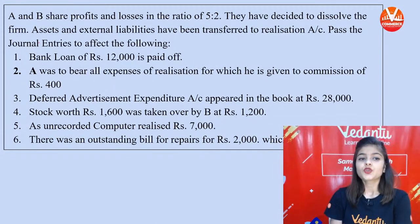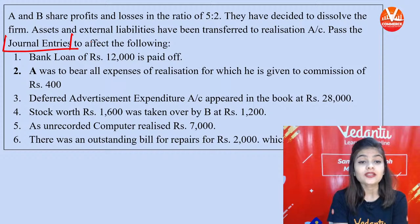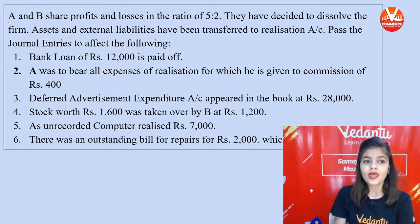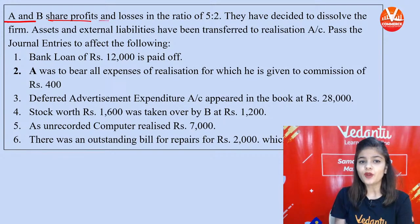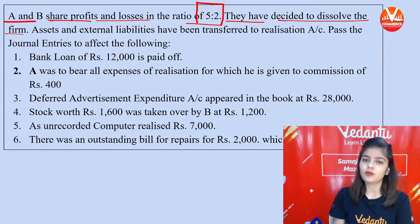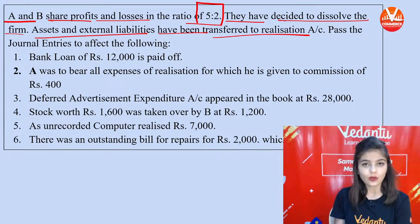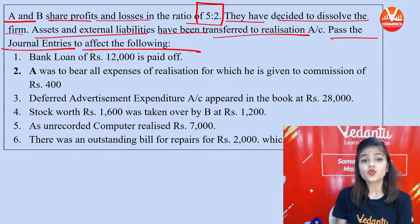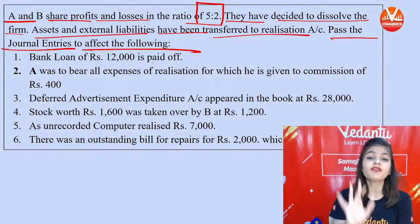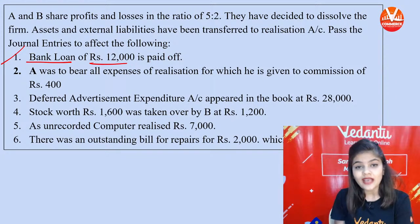Question 2: Pass journal entries. A and B are two partners sharing profits and losses in the ratio of 5:2. They decided to dissolve the firm. Assets and external liabilities have been transferred to the Realization Account. First transaction — bank loan of ₹12,000 is paid off.